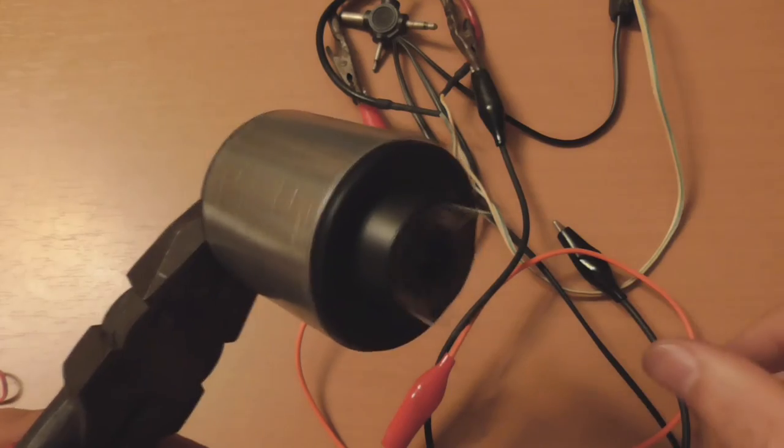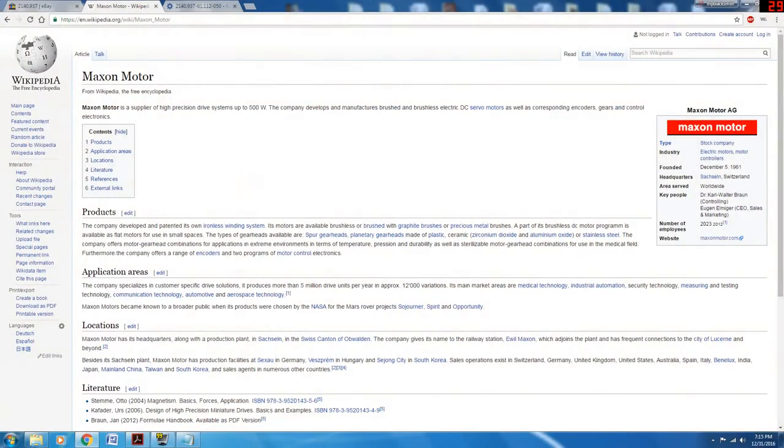Now I'd like to briefly highlight some interesting information about this motor. The manufacturer is Maxon Motor, founded on December 5th, 1961, with a headquarters in Sachseln, Switzerland. The company developed and patented its own ironless winding system. Its motors are available brushless or brushed, with graphite brushes or precious metal brushes.